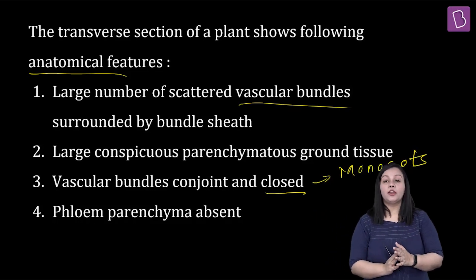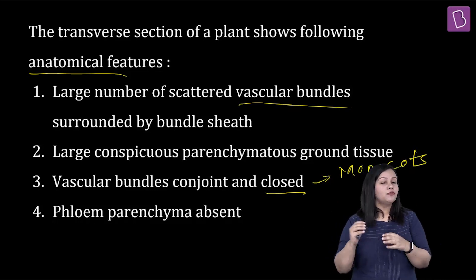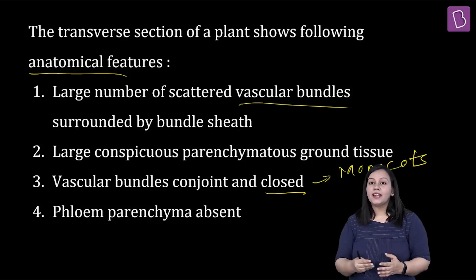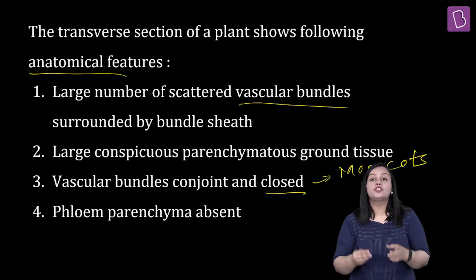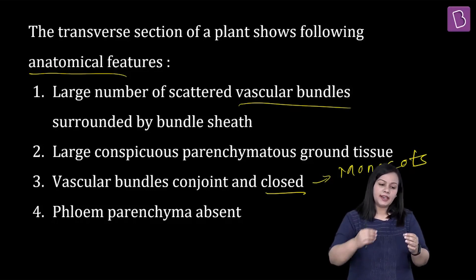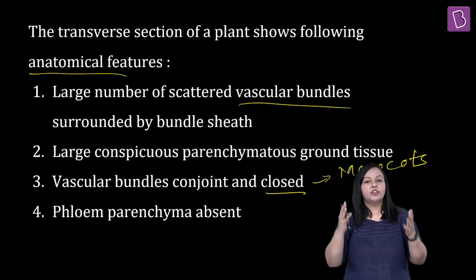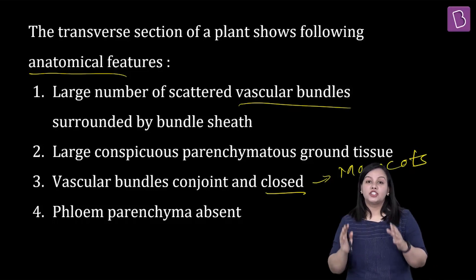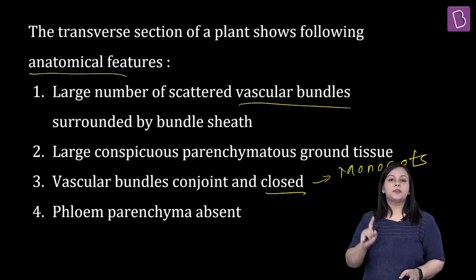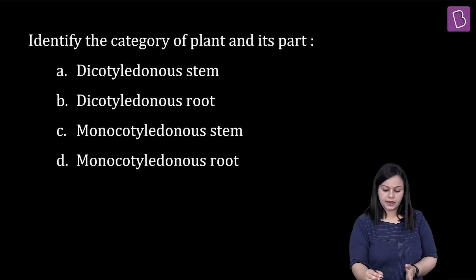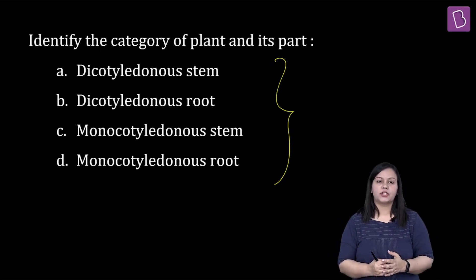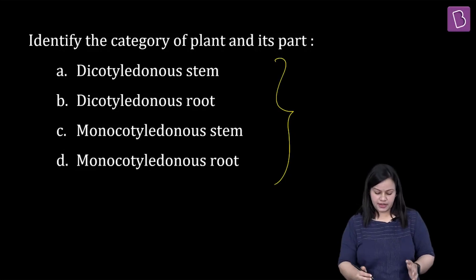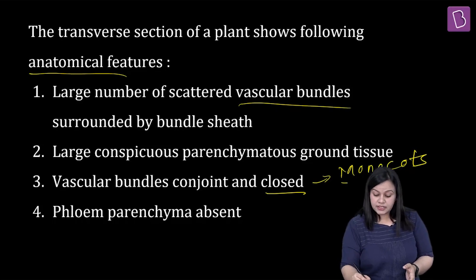Third is vascular bundles are conjoined and closed — this gives me a very big hint. Vascular bundle closed matlab straight away ho gaya hamaara monocots. Closed vascular bundle tabhi hota hai jab cambium ka ring absent ho — aur yeh monocots mein hota hai. Toh sabse pehla key feature mil gaya. Phloem parenchyma is absent — ye ek fine point hai. Ab yahan aapko dekhna hai jab aisa question aata hai ki yeh puree characteristics kiske baare mein true hain — monocot stem ya root, ya dicot stem ya root? Vascular bundle is closed means it's going to be monocots. Second important point — vascular bundles given here are conjoint. Monocot roots mein vascular bundles alag-alag radii pe arranged hote hain — radial vascular bundles. But in case of monocot stem, xylem and phloem are present together on the same radii and scattered. Answer straight away hai — monocot stem.